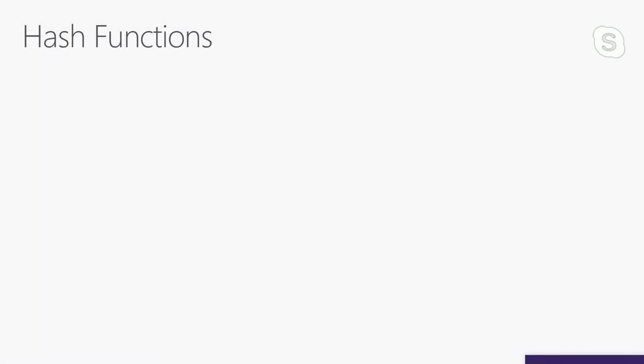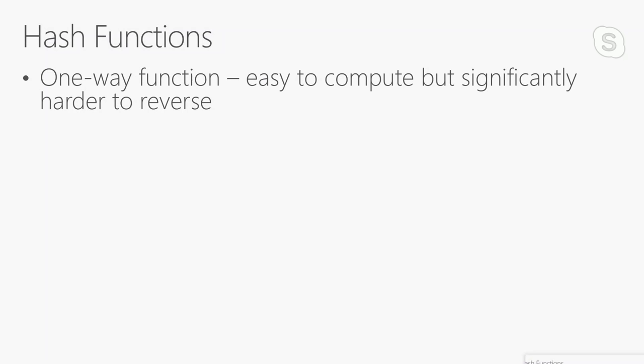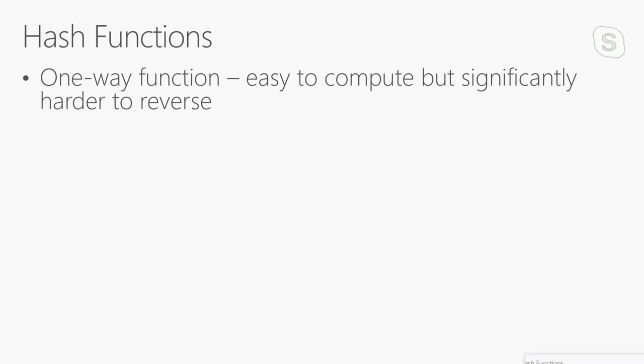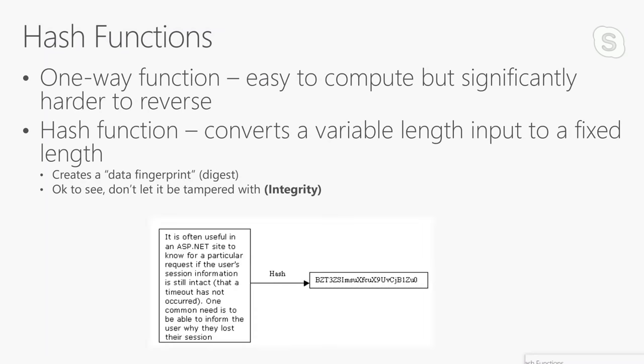First thing we'll look at is hashing. The idea with a hash function is you have a one-way function — it's easy to compute in one direction, but significantly harder to reverse. A hash function converts a variable-length input into a fixed length. It creates what you could call a data fingerprint or digest. If I have data that I don't need to hide but I don't want tampered with, that's where a hash function is useful. Even a single character change to the data will produce a vastly different hash, so I can use it to verify things haven't been tampered with.